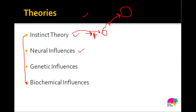The second theory is the neural influences theory. Like other biological theories, it explains the biological basis of aggression. This theory states that certain regions of our brain influence aggression. If there is some issue or abnormality in those brain regions, aggressive behavior can result. The two key brain regions are the amygdala and the prefrontal cortex — which were covered in detail in bio psychology. You can let me know in the comments which part of the brain they belong to: forebrain, midbrain, or hindbrain.